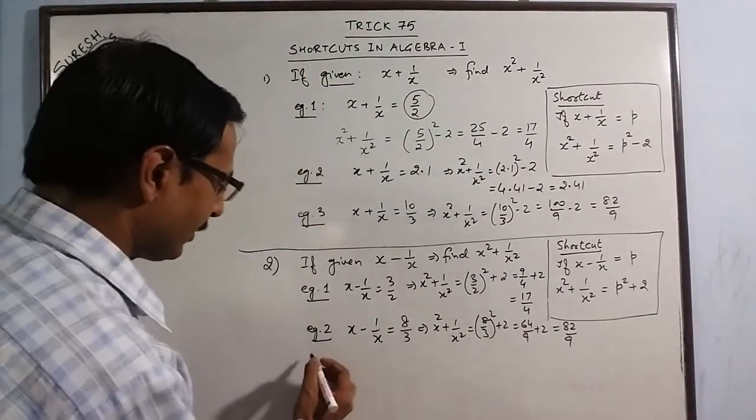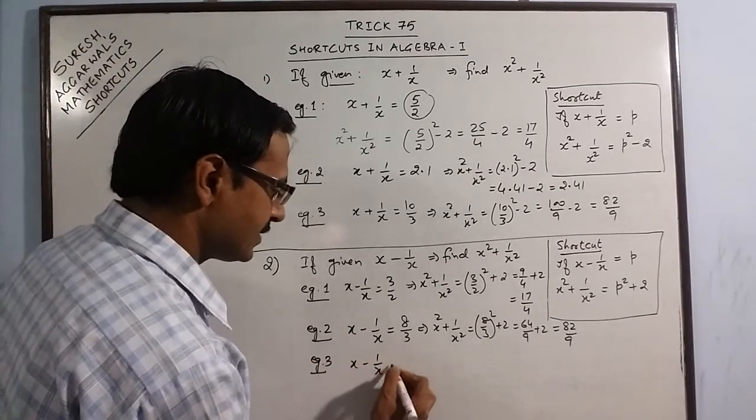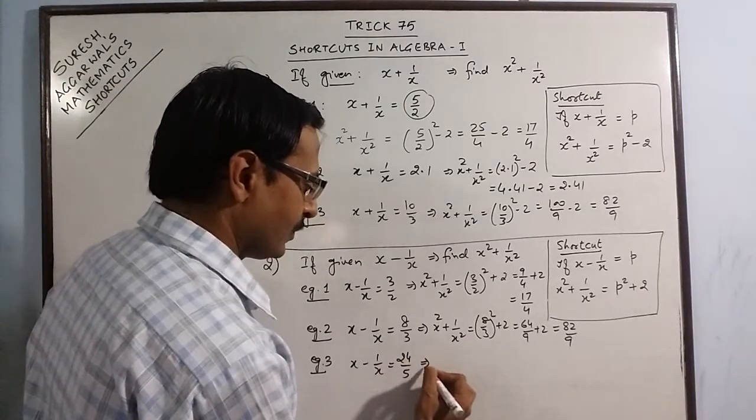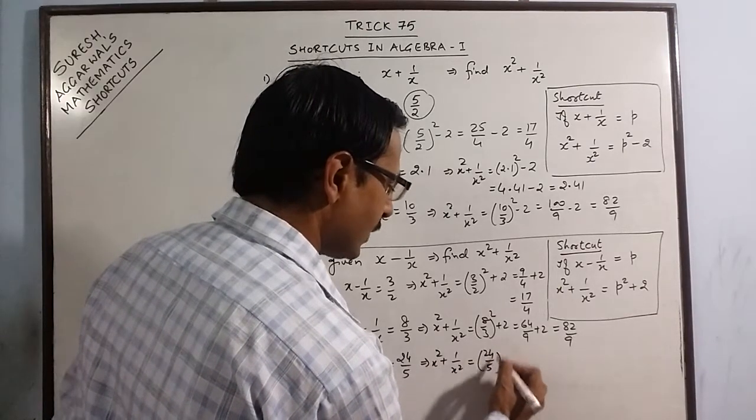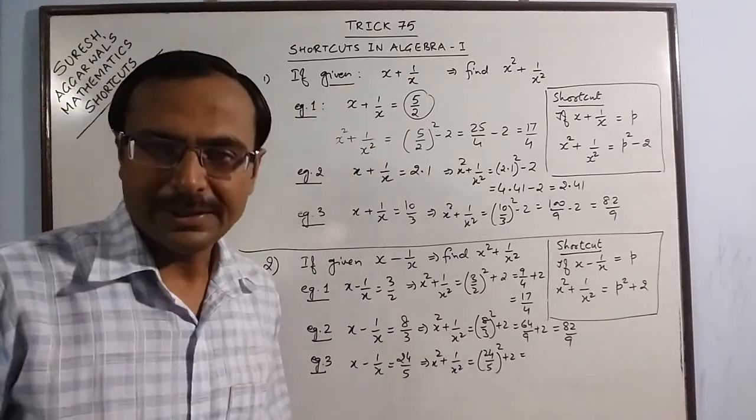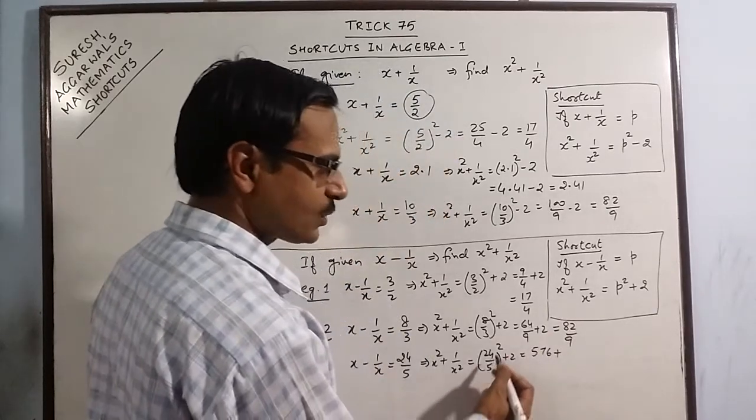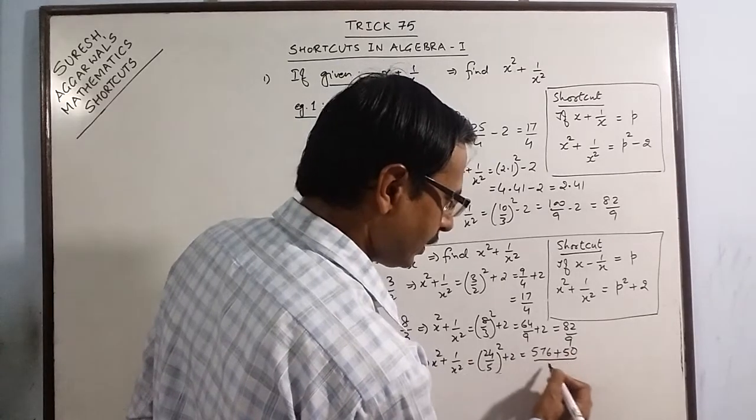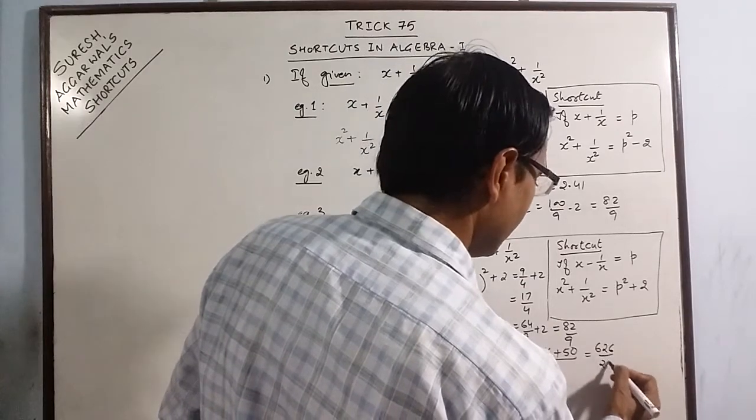If you want, I can solve one more example for you. x minus 1 by x, this time the value is 24 upon 5. x squared plus 1 by x squared will be equal to 24 upon 5 squared plus 2. The square of 24, you should know that the square of 24 is 576 plus 5 squared is 25. So 25 into 2 is 50 upon 25. The answer is 626 upon 25.